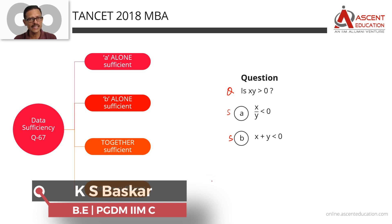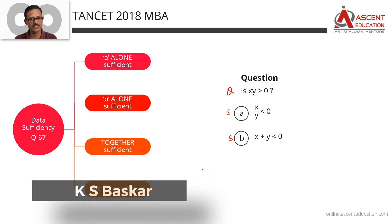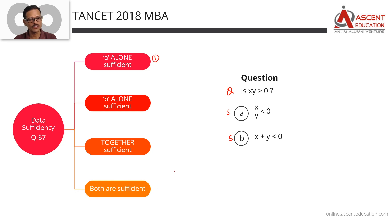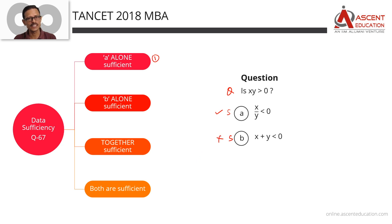In 2018, there are 4 answer options. Answer option 1: if Statement A alone is sufficient to answer the question, meaning Statement 1 alone gives us the answer but Statement 2 does not, then the answer is option 1.